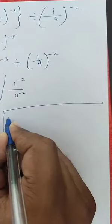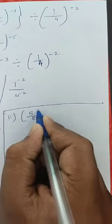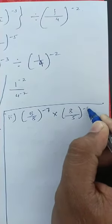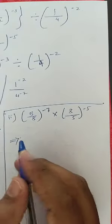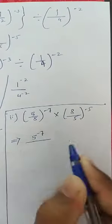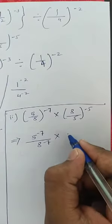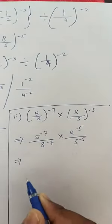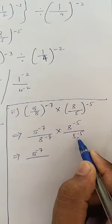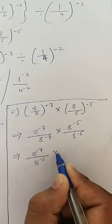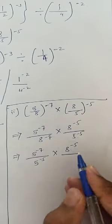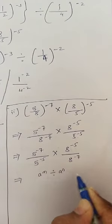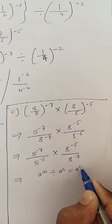The second problem: (5/8)^(-7) × (8/5)^(-5). Multiply separately in numerator and denominator: [5^(-7) / 8^(-7)] × [8^(-5) / 5^(-5)]. Rearrange to group like bases: [5^(-7) / 5^(-5)] × [8^(-5) / 8^(-7)]. Now use the formula a^m ÷ a^n = a^(m-n).